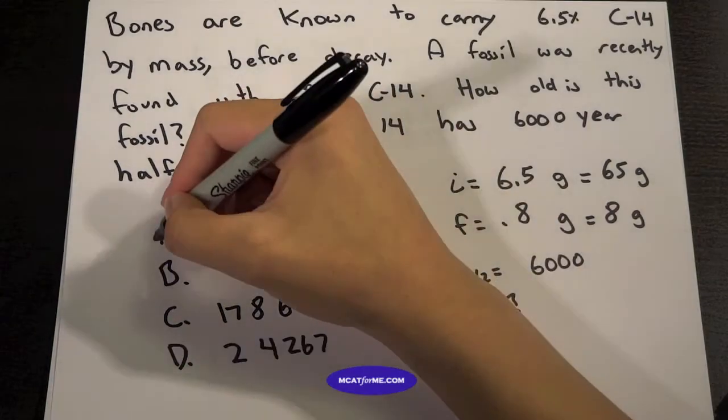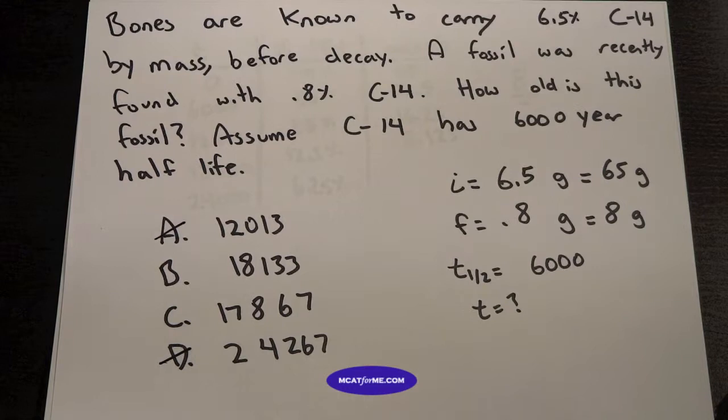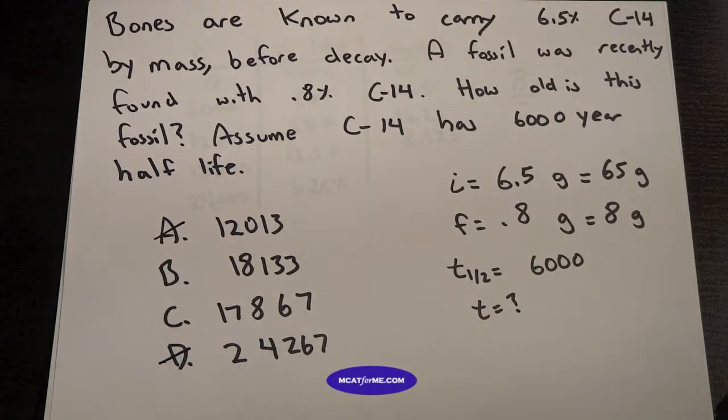So right off the bat, we can eliminate A and D, 12,000 and 24,000. Those are completely off. But wait, we have B and C. They're very close to 18,000. So what do we do there?